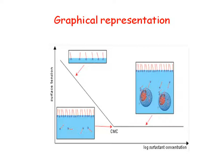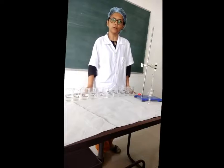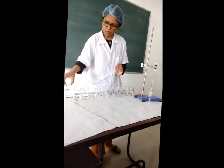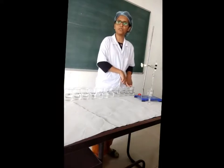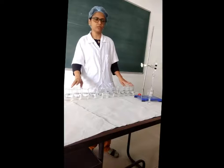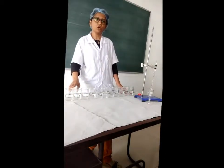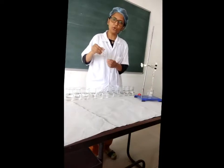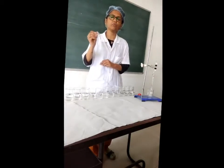Now we will see the actual practical demonstration of this experiment. First prepare different dilutions of surfactant — here I have prepared from 0.0% to 1% of different dilutions. To determine critical micellar concentration, we first need to determine the density of each liquid using this density bottle, which has a capacity of 10 ml. First take the weight of the empty bottle, then fill it with the liquid.